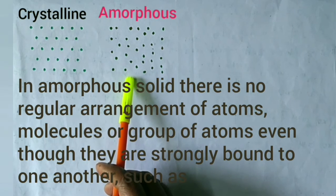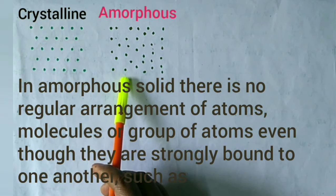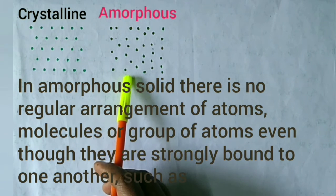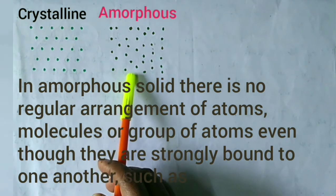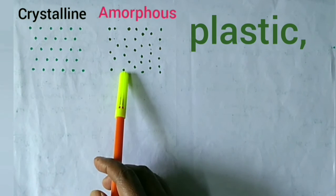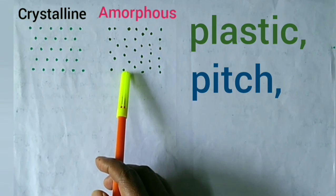Again, in amorphous solid, there is no regular arrangement of atoms, molecules, or group of atoms, even though they are strongly bound to one another, such as plastic, pitch, glass, etc.